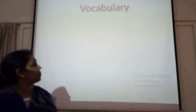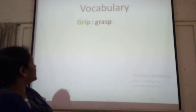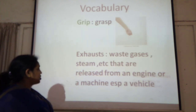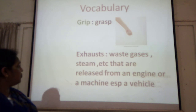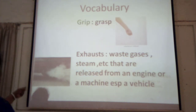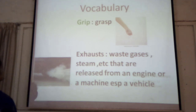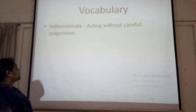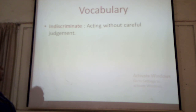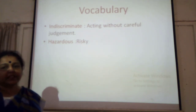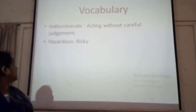At first, I am giving you some important vocabulary. It is grime. Grime means dirt. You can see the image of grime in the picture. Exhausts — waste gases or steam that are released from an engine or a machine, especially from a vehicle. You can see the image of exhausts in our picture. Now, the other important word you will find in the text is indiscriminate. This is an adjective word. Indiscriminate means acting without careful judgment, or you can say without proper planning. Then the word hazardous.